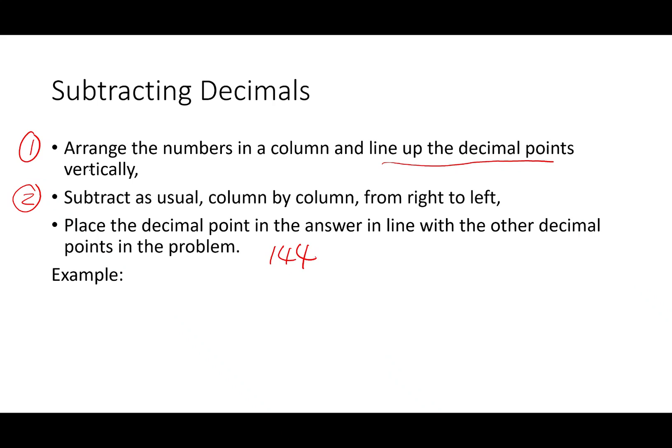For example, if we want to do 144.87 minus 0.321, following step number one, we will put them in column: 144.87 and then 0.321, minus. As usual, we can add in a 0 here.